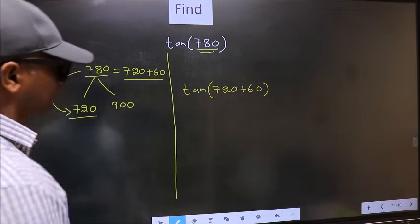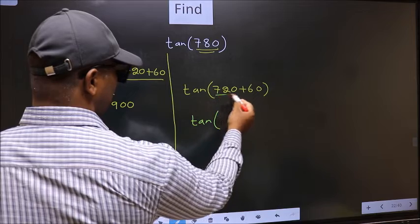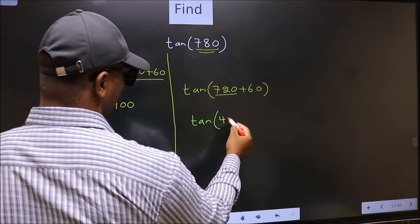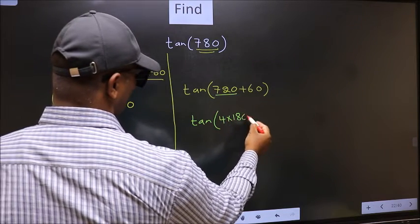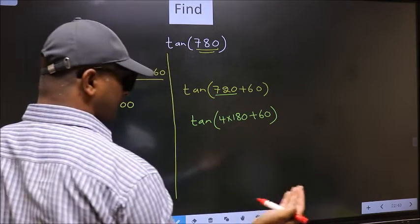Next, tan. In place of this, we should write 4 times 180 plus 60.